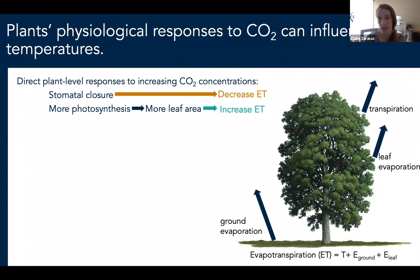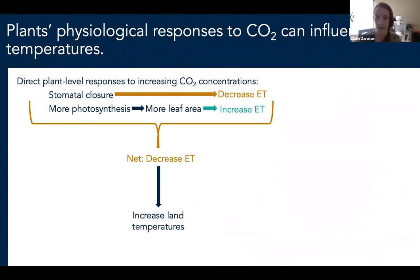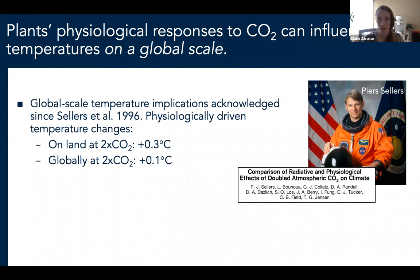The balance of these two factors will determine the net effect of plant responses on land evapotranspiration. For the most part, we think that the stomatal closure term will dominate in many regions with at least moderate leaf area, based on models and field experiments, leading to a net decrease in land ET. This is a decrease in evaporative cooling, which leads to warming. This idea isn't new — we've known about this since Sellers et al. 1996.